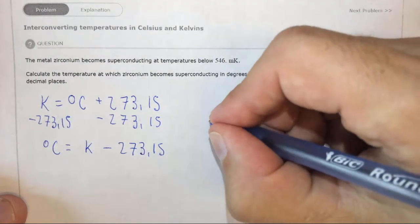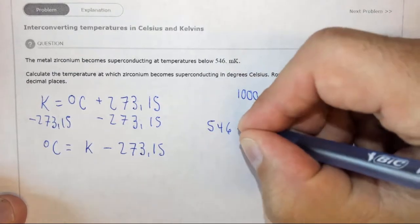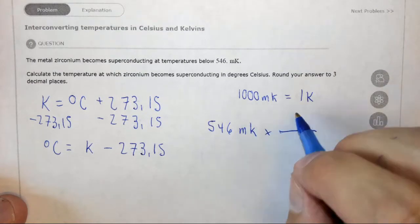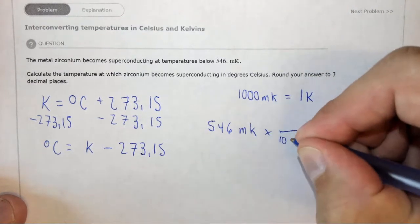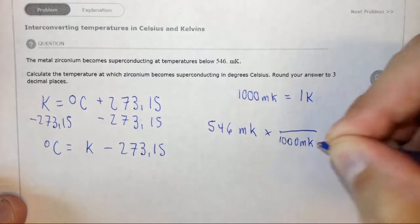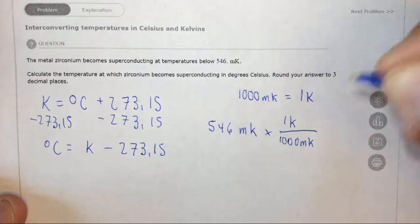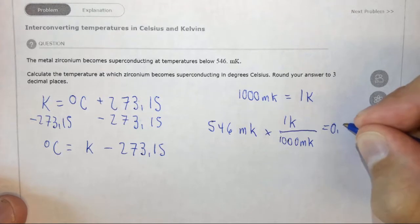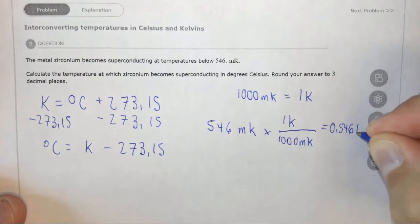Therefore, if we take our 546 millikelvin times, we want to put our 1000 millikelvin on the bottom so millikelvin cancel out, then 1 Kelvin on top, and then we get 0.546 Kelvin.